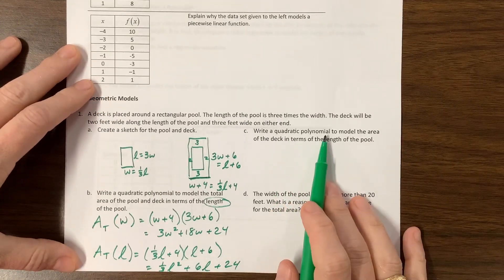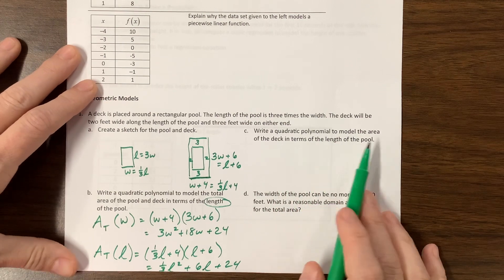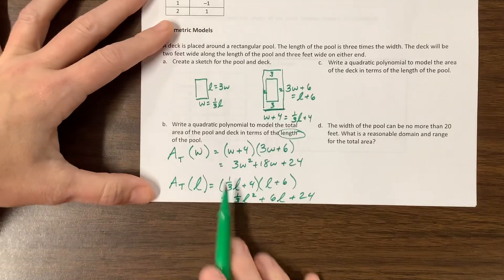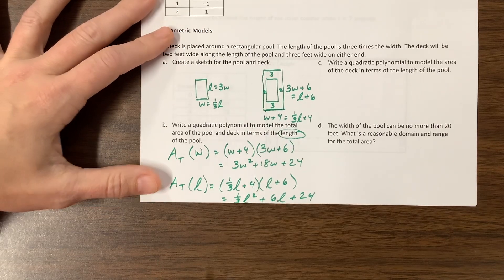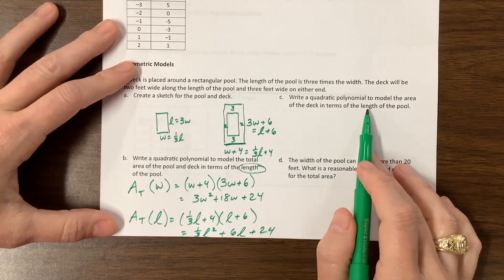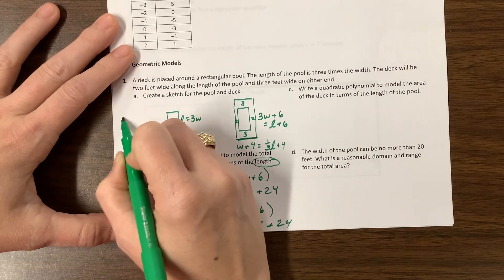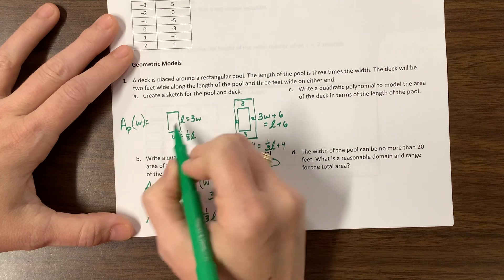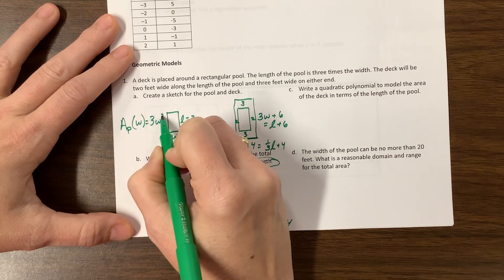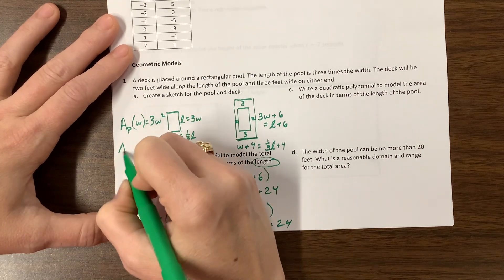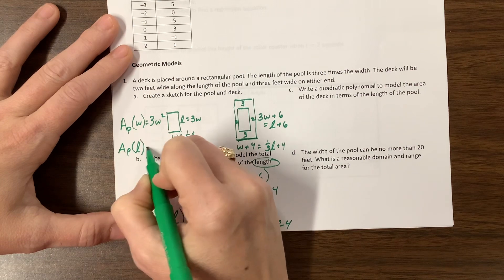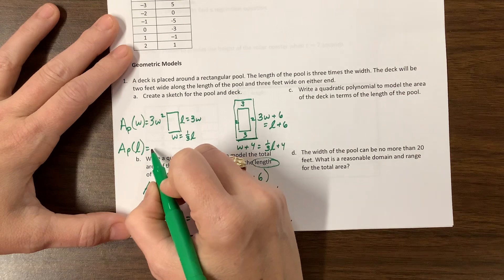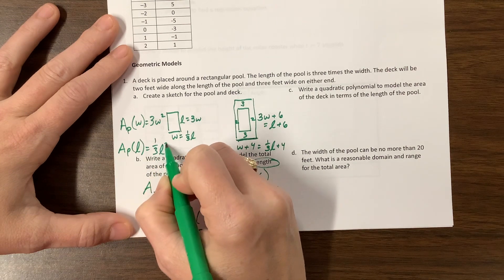And then they want us to give them a quadratic polynomial to model the area of the deck. So basically, we have to take this total area and subtract out the pool. Well, the pool, if we're in terms of the pool, so we could say the area of the pool in terms of w would just be w times three w, so three w squared. The area of the pool in terms of length would be one-third l times l, so it's one-third l squared.